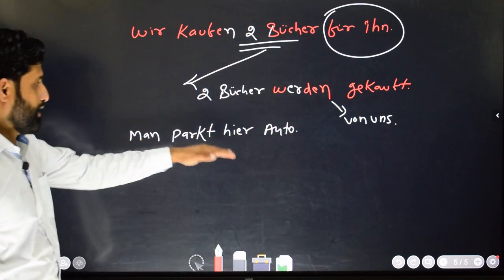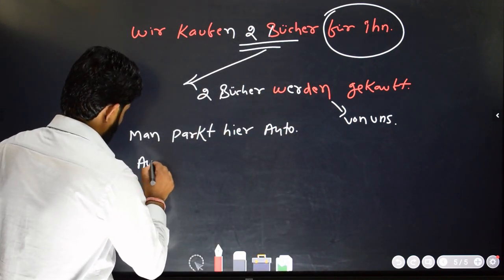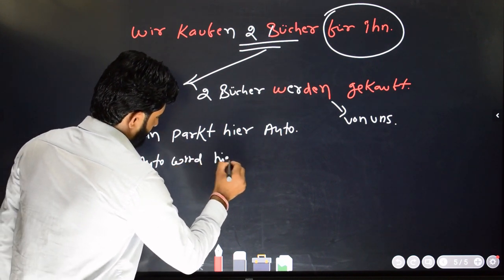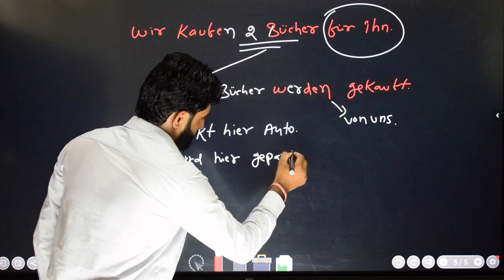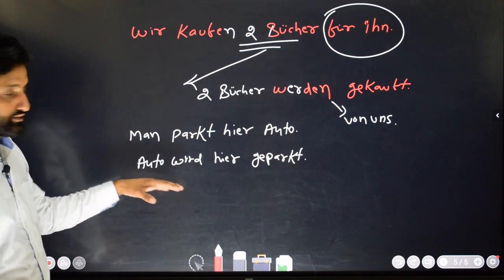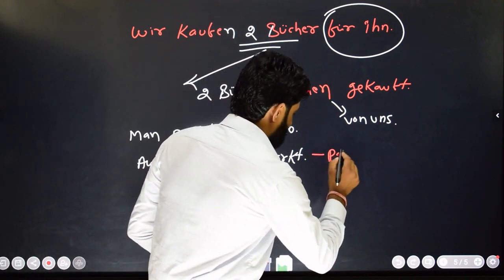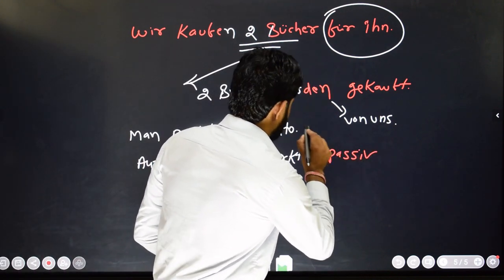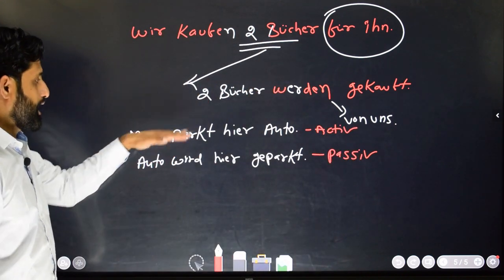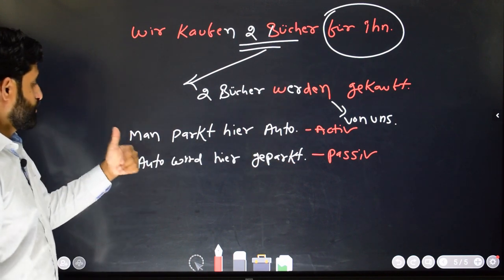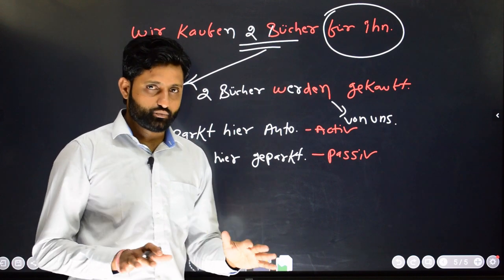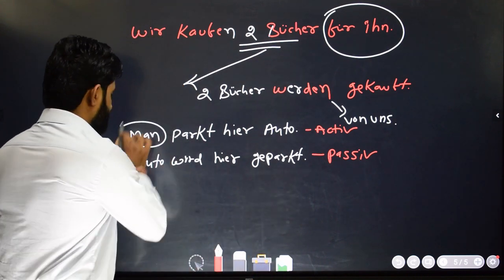'Man parkt hier ein Auto.' Converting to passive voice, we ignore 'man.' So: 'Hier wird ein Auto geparkt.' You can clearly see in the passive voice sentence that the action is more important than the person who is doing the task. Active voice: 'Man parkt hier ein Auto.' Passive voice: 'Hier wird ein Auto geparkt.' We are ignoring 'man.'